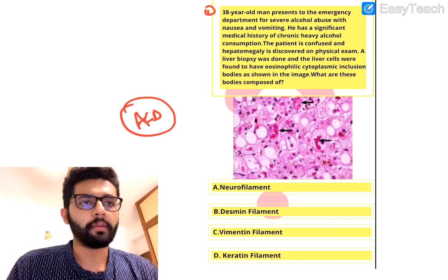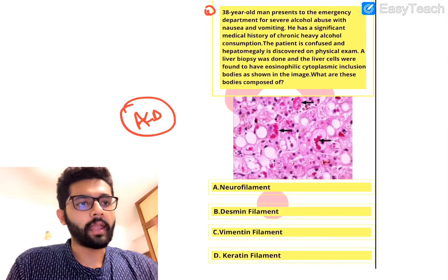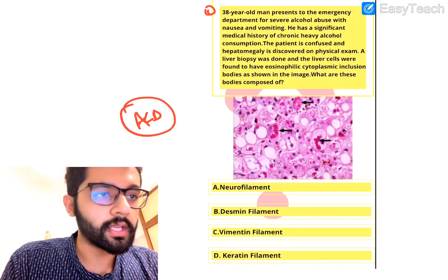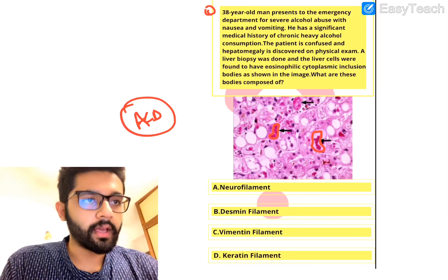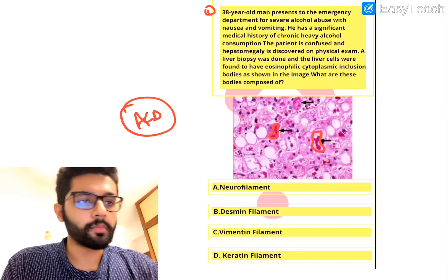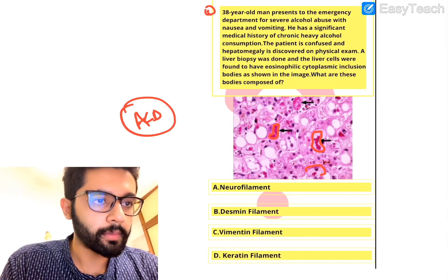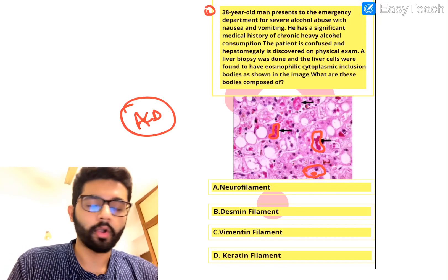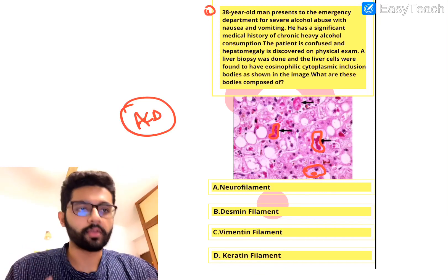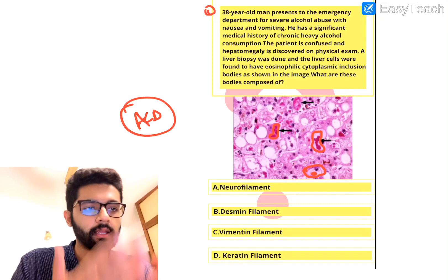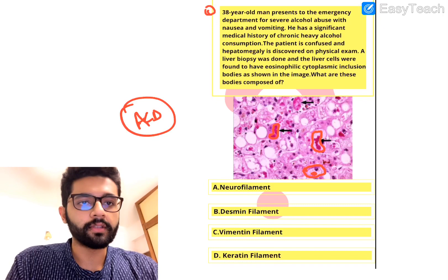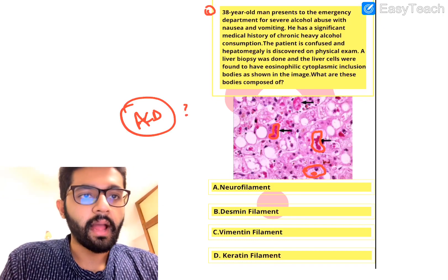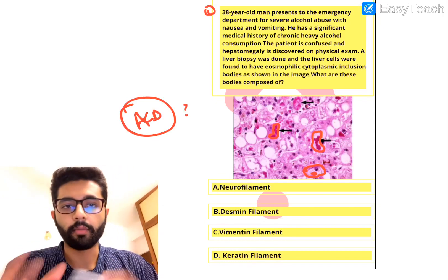We did a liver biopsy from this patient and on histopathology, these pink eosinophilic inclusion bodies were seen within the hepatocytes. They are cytoplasmic inclusion bodies. Here you can see the hepatocyte with a dark pink staining body — an eosinophilic or pink staining inclusion body in the cytoplasm of these cells. This was the HPE of this patient with alcoholic liver disease, and the question is what are these bodies composed of?